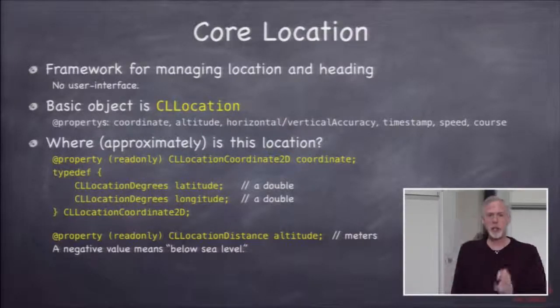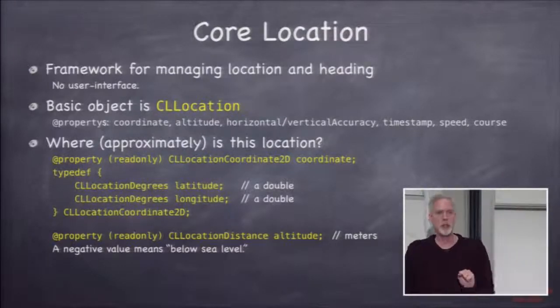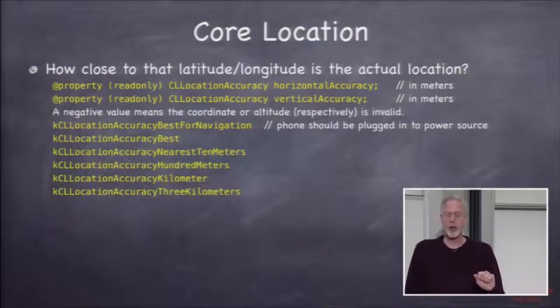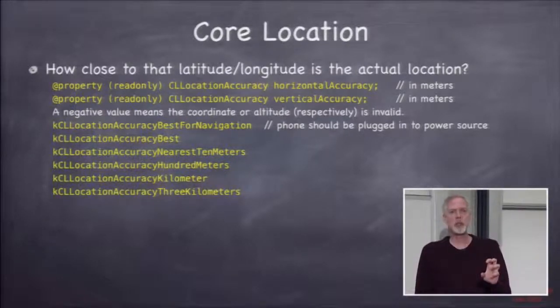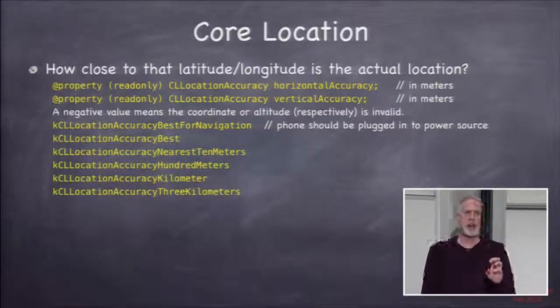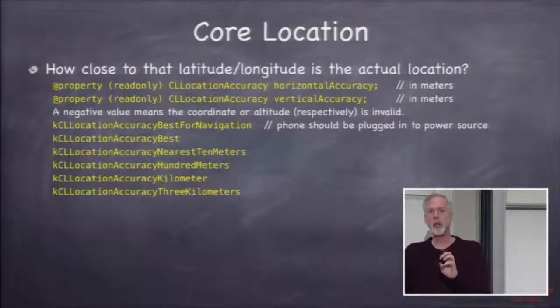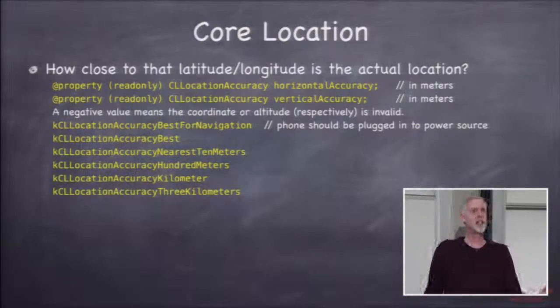So this is the basic object in core location. So the question is, let me talk about accuracy, very important. So when you get a location, you got it in a certain way that might have varying accuracy. If you got that location from GPS, it could be very accurate. If you got it by looking at local cell towers, it might be pretty inaccurate. It could be a mile off actually if you got it that way.